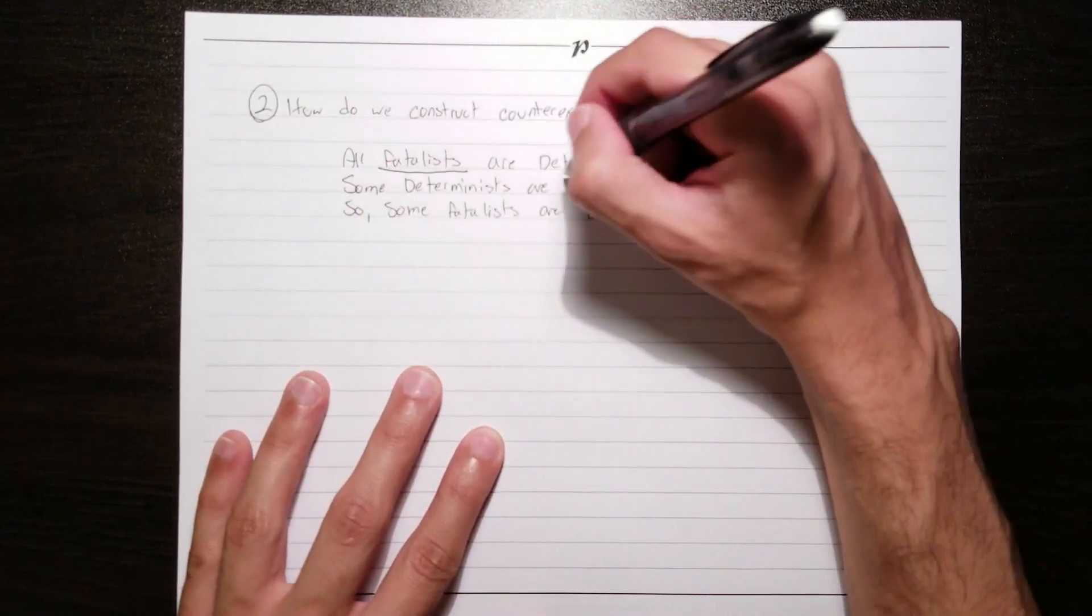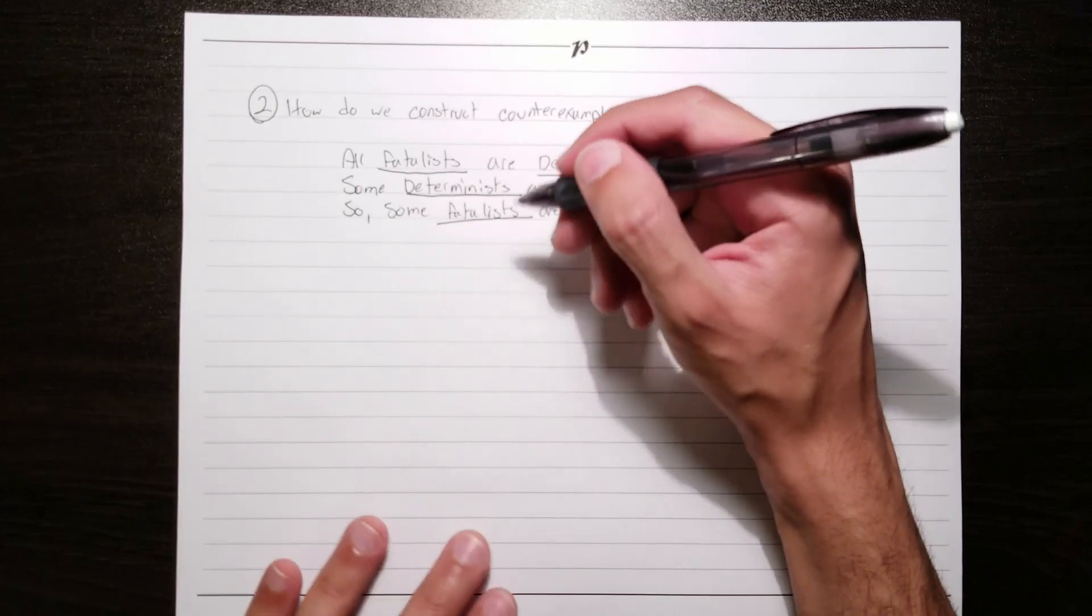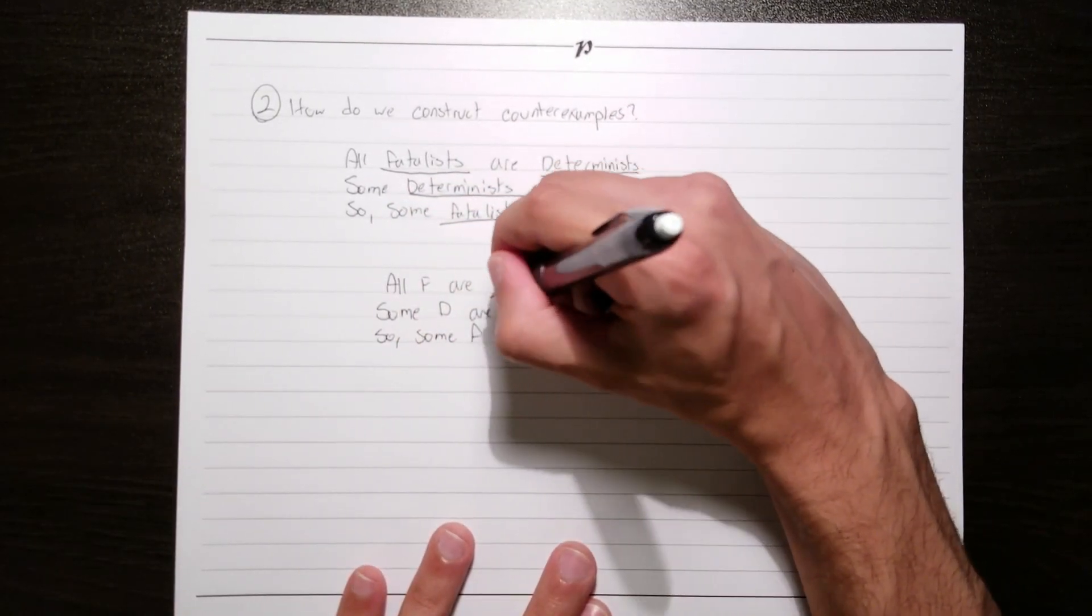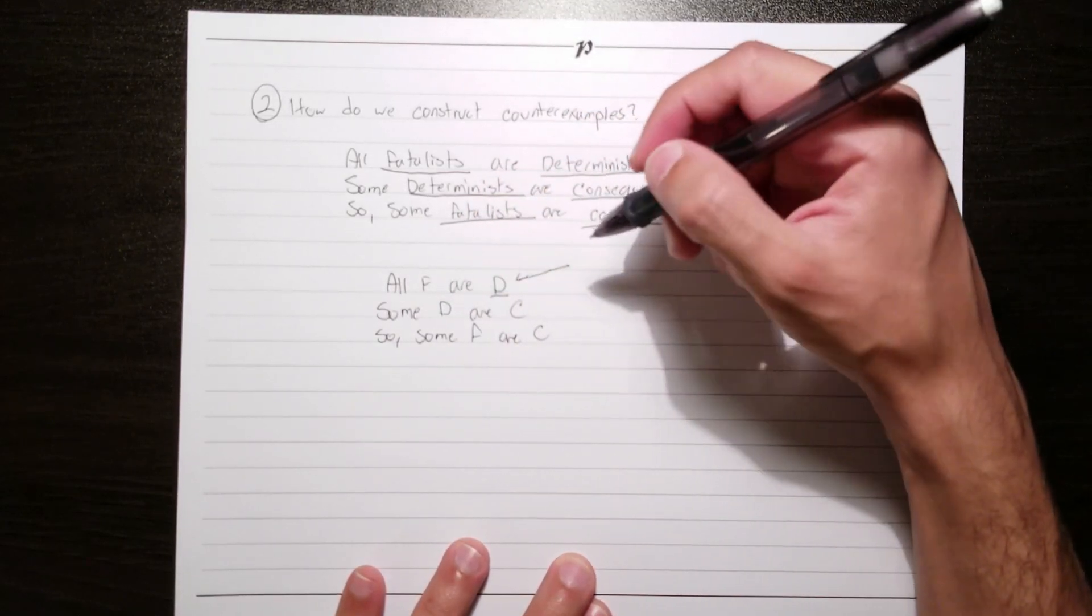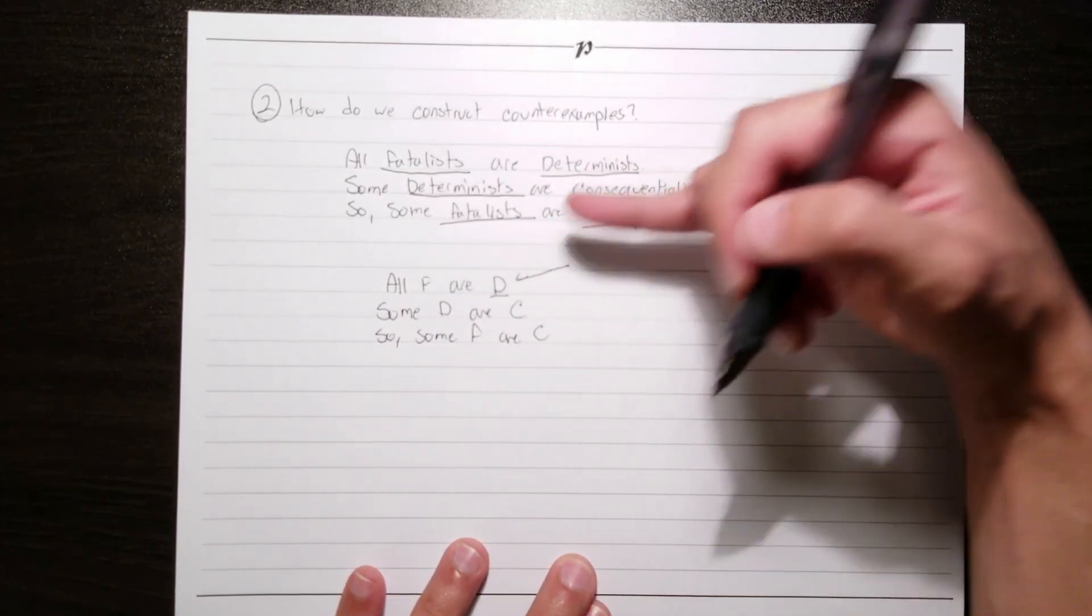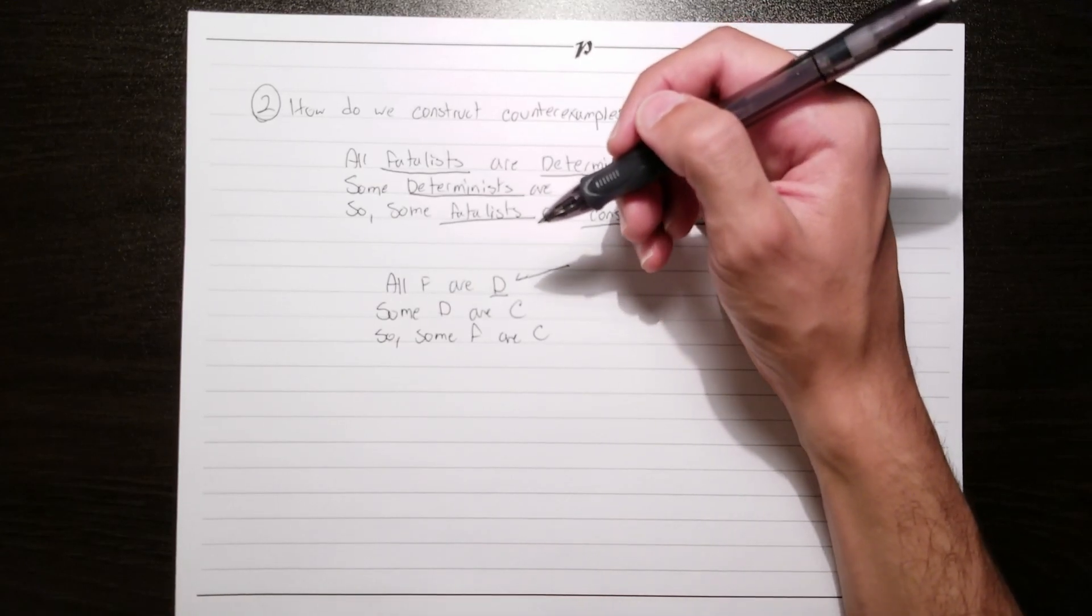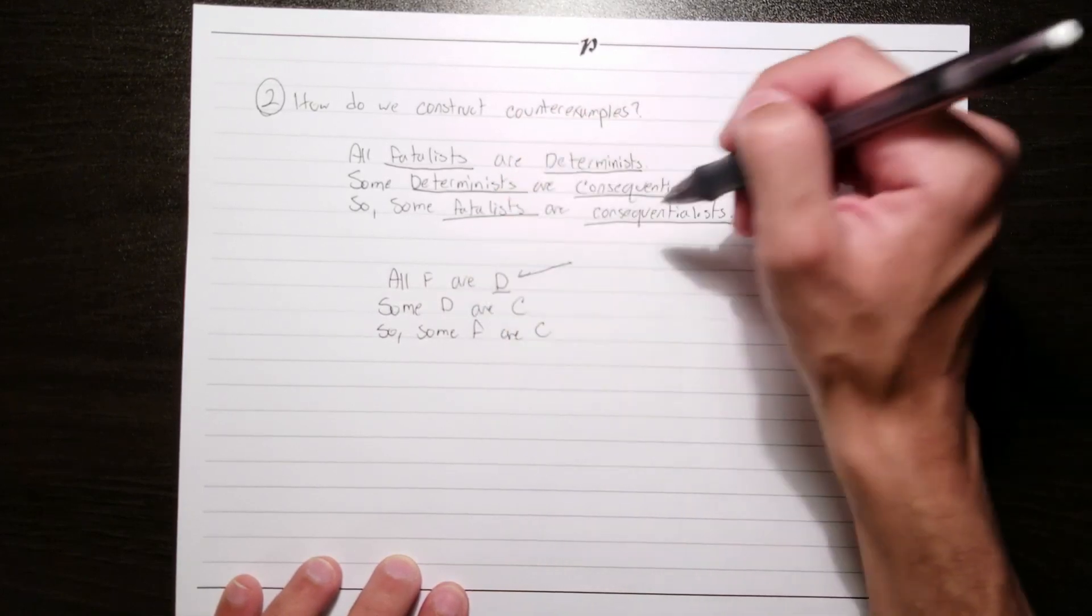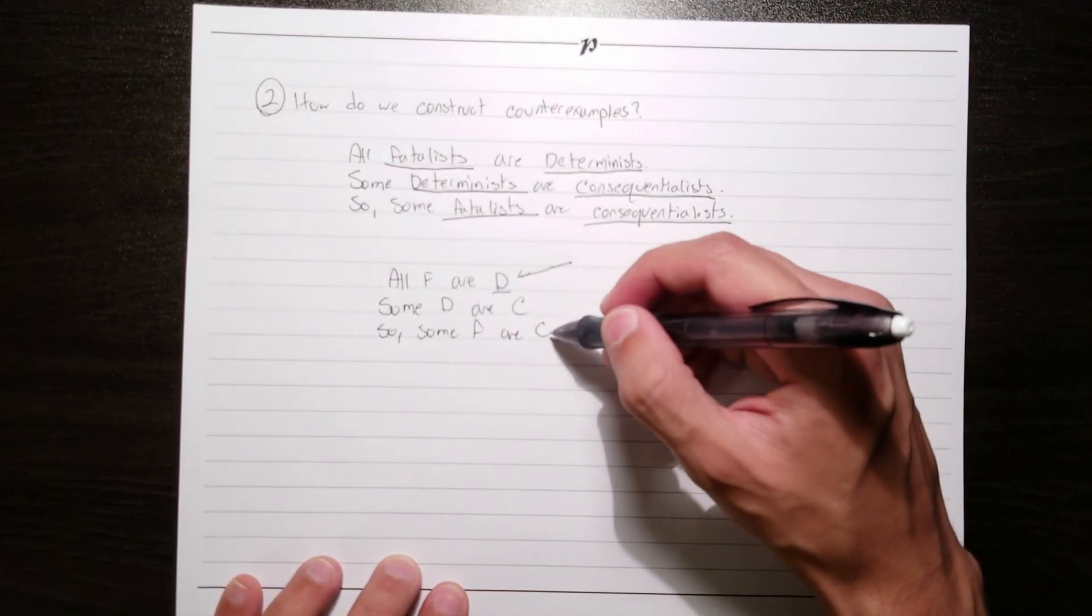Our first step in constructing a counterexample for this argument is to strip it of its content. We'll replace its content with letters. Notice the letter choice. I didn't just stick to A, B, and C. Instead, I decided to choose letters that fit with the previous content of the argument just to make my life easier when referencing the argument. I highly recommend doing this when you're constructing your own counterexamples. Of course, keep in mind that the letters themselves don't actually mean anything. They're just empty placeholders.